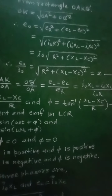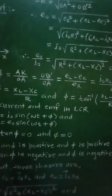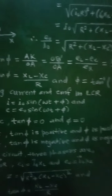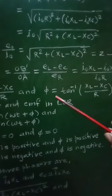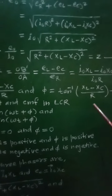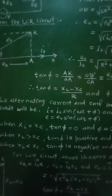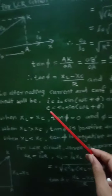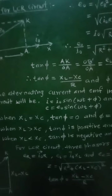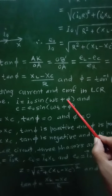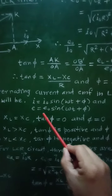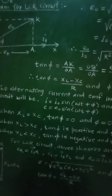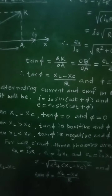The alternating current and EMF in the LCR circuit are given as: I = I₀ sin(ωt + φ), and alternating EMF E = E₀ sin(ωt + φ). These are the expressions for alternating current and alternating voltage in the series LCR circuit.